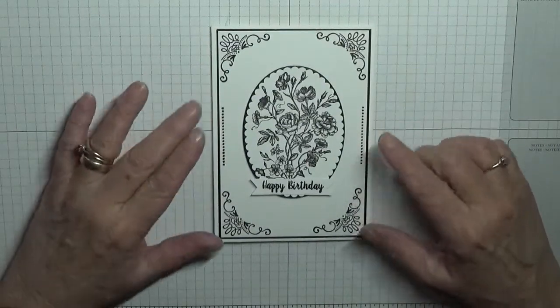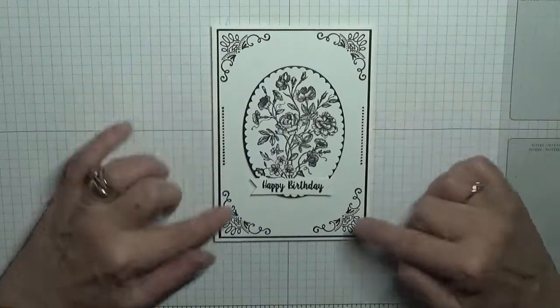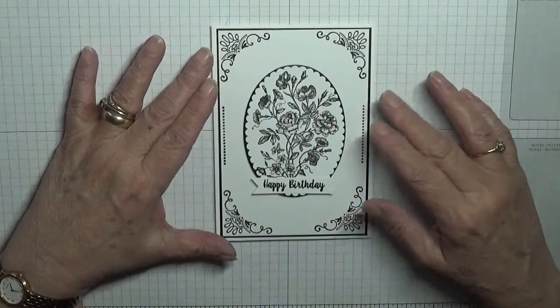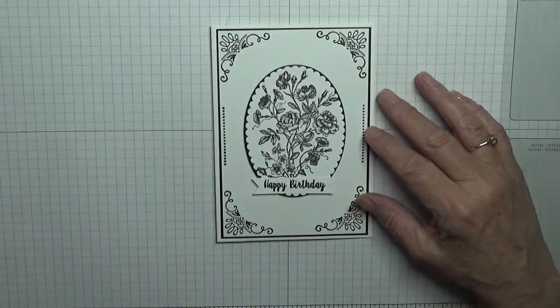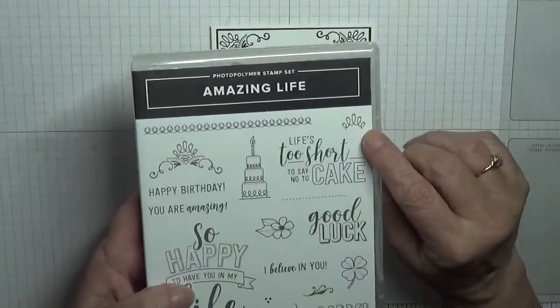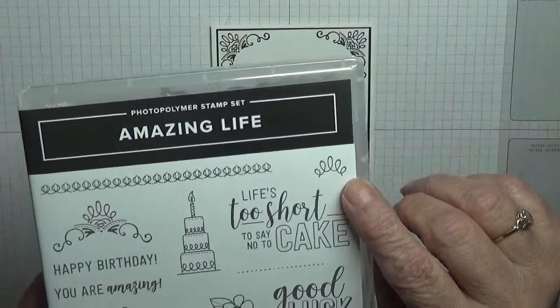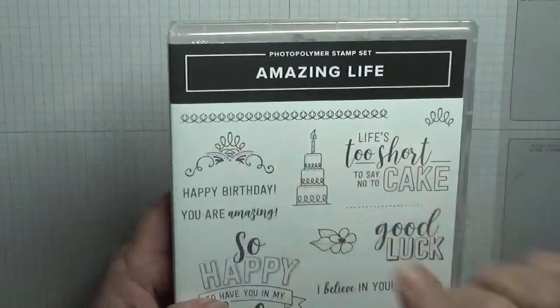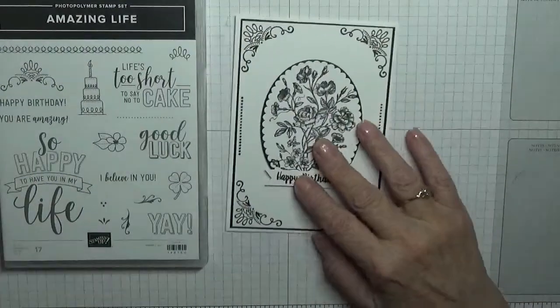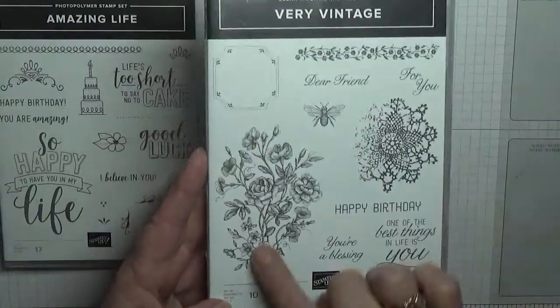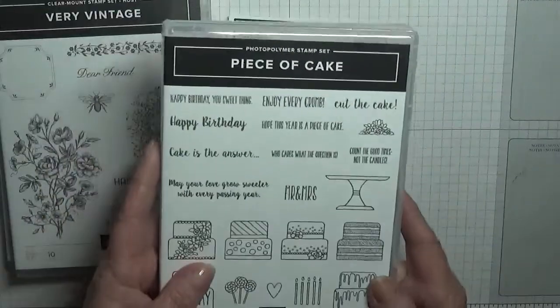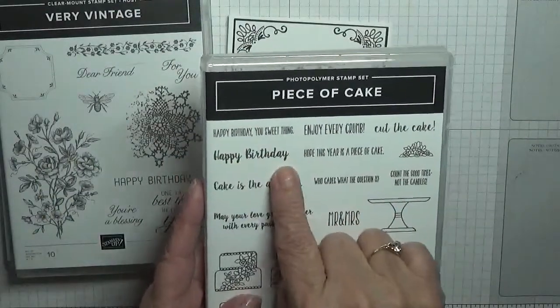This card I used a couple of stamp sets. You've seen me do this before or something like this before with the Amazing Life stamp set. On the one card I did I used the tiny crown, this time I'm going to use the big one and the dots. I'm also going to use Very Vintage for the flower, and for the happy birthday it's from Piece of Cake.